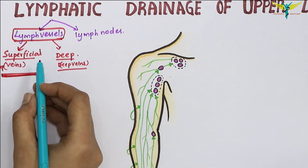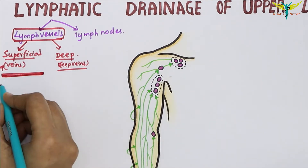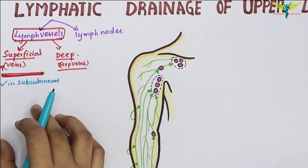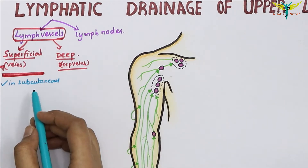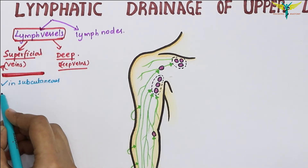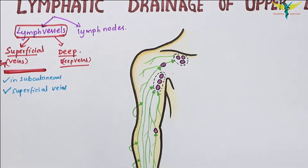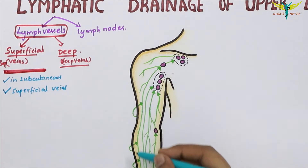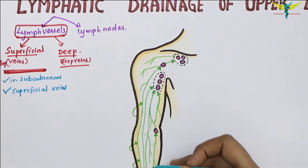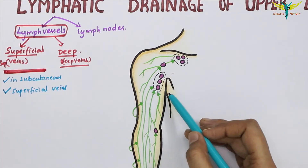The superficial lymph vessels are located in the subcutaneous tissue. They are much more numerous than the deep lymph vessels, and they accompany the superficial veins. The superficial lymph vessels drain the lymph from the skin and the subcutaneous tissue, and their course is upwards towards the axilla. Most of them end in the axillary lymph nodes.